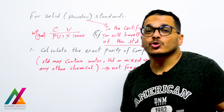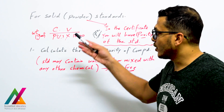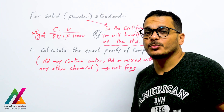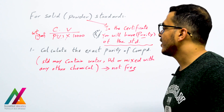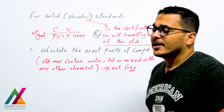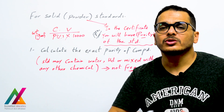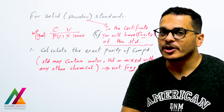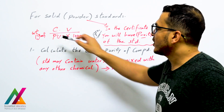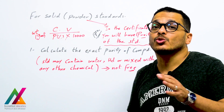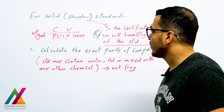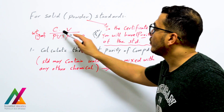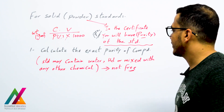If you have a solid or powder standard, you can use this equation: Weight = (C × V) / purity × 10,000, where C is the concentration you want to prepare, V is the volume, and purity is the purity of the powder standard. You multiply by 10,000 to convert the percentage to ppm (milligrams per liter).